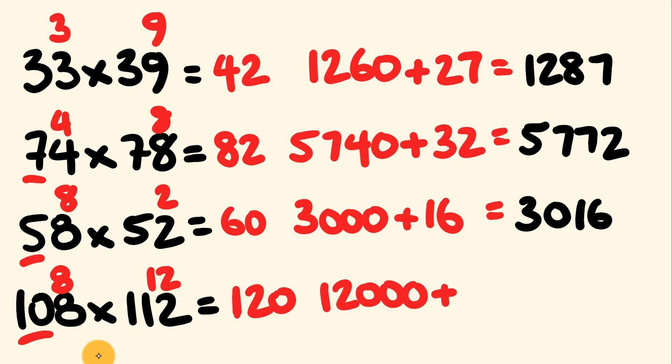And this is a tens number that becomes 12,000. To that, we're going to add, 8 times 12, which is 96. So, we add these together, we get our answer of 12,096.